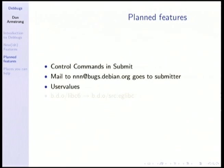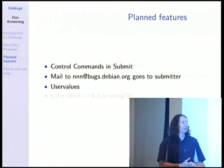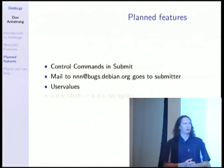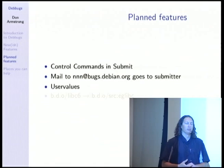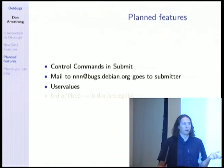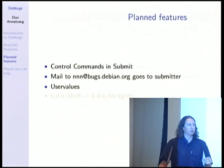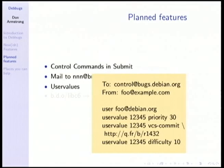Another planned feature is user values. This will enable you to say, 'I have a field called priority' and assign any value you want to it. You can have a field called VCS-commit and put in it the path to your gitweb or whatever repository that indicates what commit happened when you closed that bug. Anything that helps you organize or prioritize your bugs can be put in there. If some of these values turn out to be really useful with common usage, they should probably be promoted into the BTS proper. You can set priority, difficulty — all sorts of things that enable you to order your bugs and provide more information.